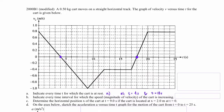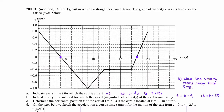Part b: indicate every time interval for which the speed — the magnitude of velocity — of the cart is increasing. We need to look at the graph and see when the cart is moving away from 0 m/s, either in the positive or negative direction. At 4 seconds the cart is at rest, and after 4 seconds it speeds up to 1 m/s in the negative direction, so from 4 to 9 seconds the cart is speeding up. Also, the cart is moving away from 0 at 18 seconds up until the 20 second mark. Those are our two intervals where the cart's speed is increasing.